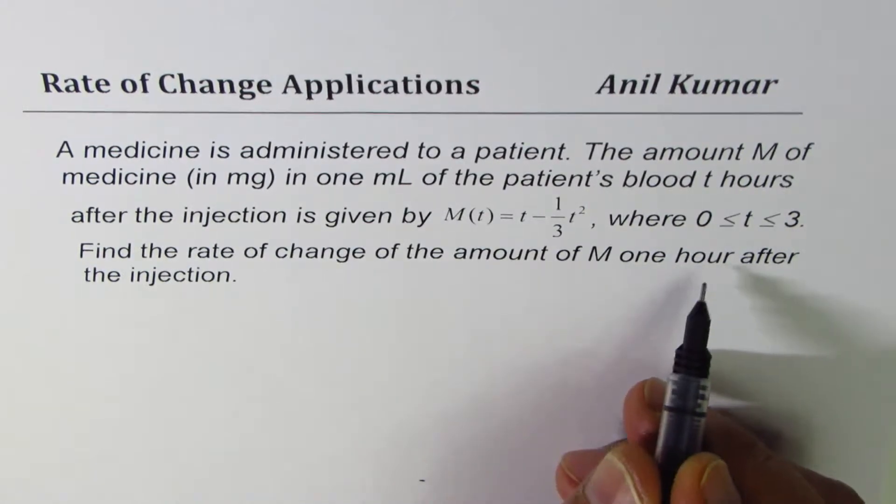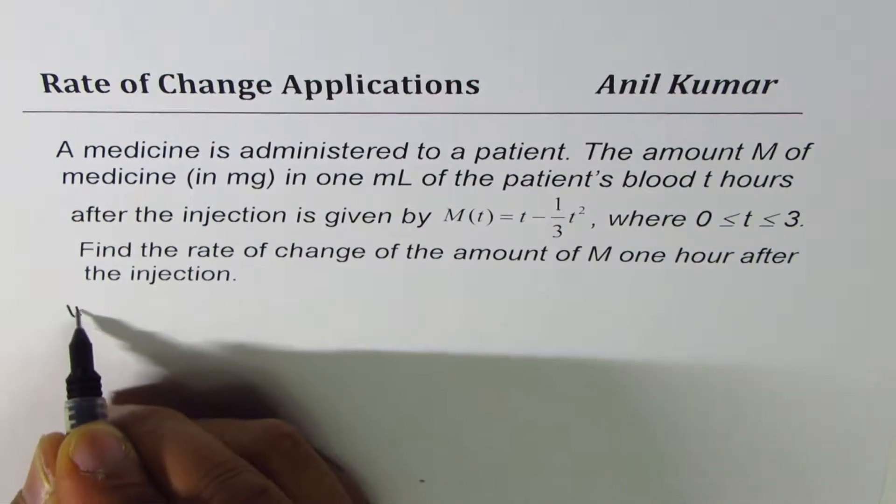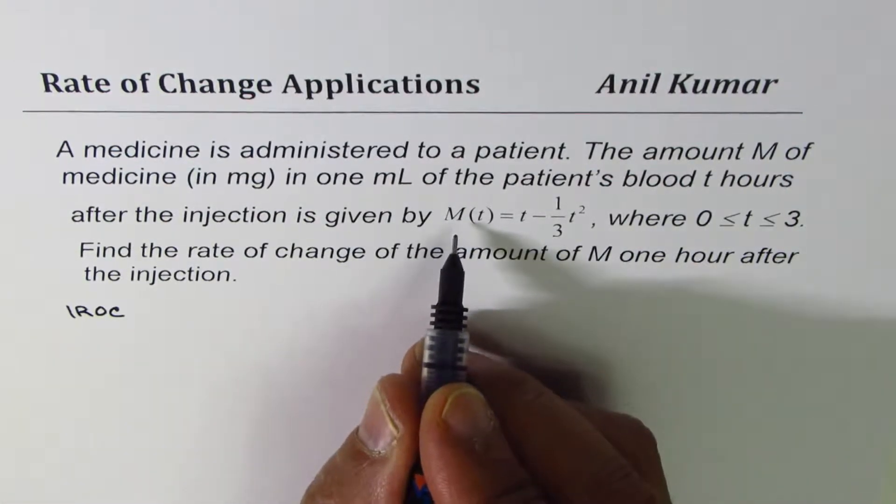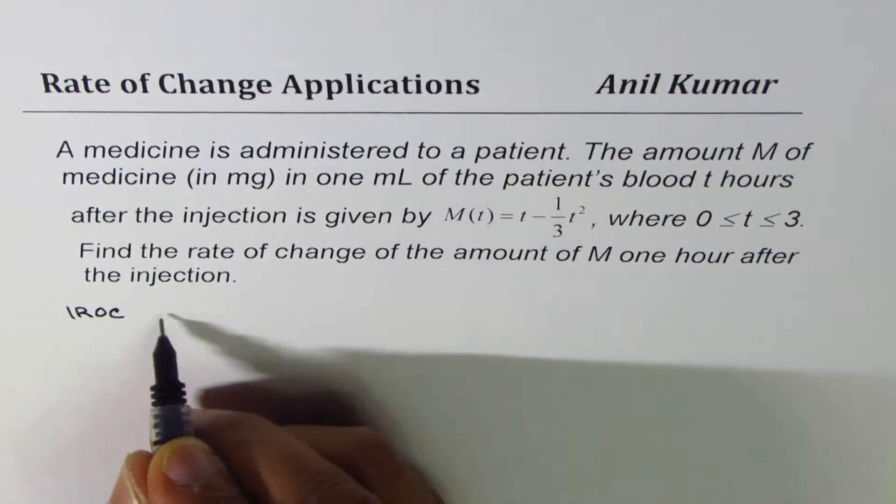So let me write down instantaneous rate of change. In this case for the medicine, it can be given as limit when h approaches 0 for M(t+h) - M(t) divided by (t+h) - t.